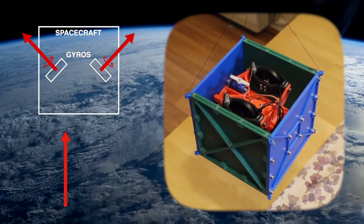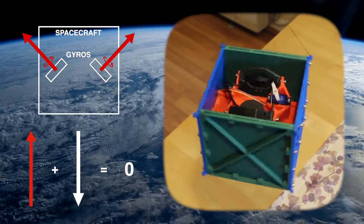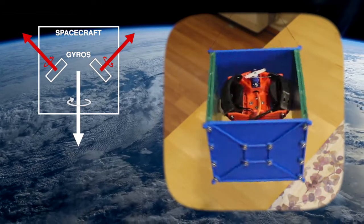Because the total angular momentum of the spacecraft must remain constant, this action from the gyros creates a reaction in the rest of the spacecraft, causing it to rotate in the opposite direction.